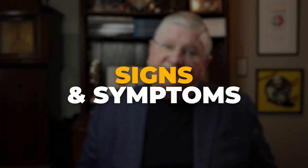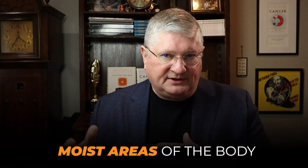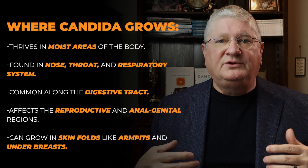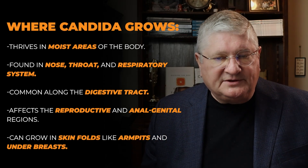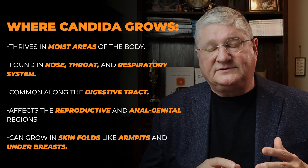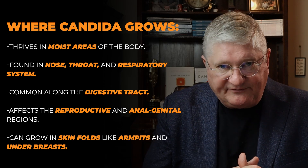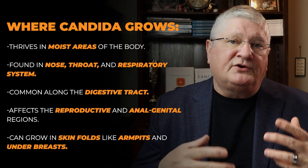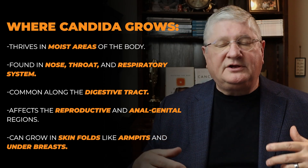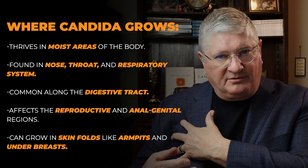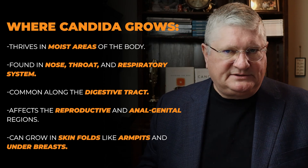Signs and symptoms depend on where you have it. Candida normally grows in moist areas of the body — the respiratory system, ear, nose, and throat. It can grow all along the digestive system, in the reproductive system, and in the anogenital region. You can also get candida in intertriginous regions that are more moist, such as the armpits or under the breasts.